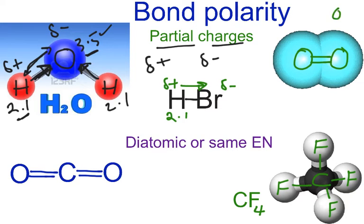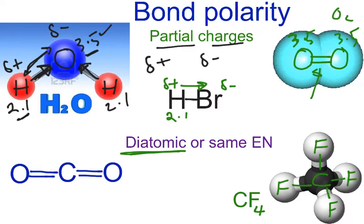Now let's look at O2. We have a double bond here. Oxygen has an electronegativity of about 3.5, and on the other side, also 3.5. So who is going to win the tug of war? No one — because they have equal strength. You will have no partial charge created in this diatomic molecule. So if your molecule is diatomic with the same two atoms and they have the same electronegativity, your bond has no bond polarity.